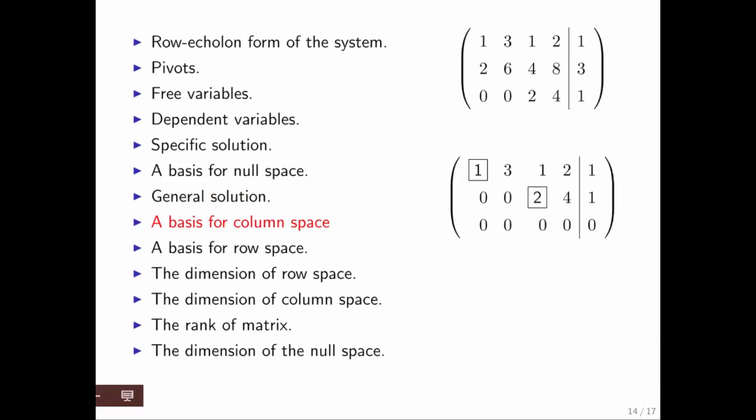How do we find a basis for the column space? We know that the column space has dimension equal to the number of dependent variables. The way you find a basis for the column space is you look for where the pivots are, and you pick out the columns in the original matrix associated with the columns in which eventually the pivots appear.